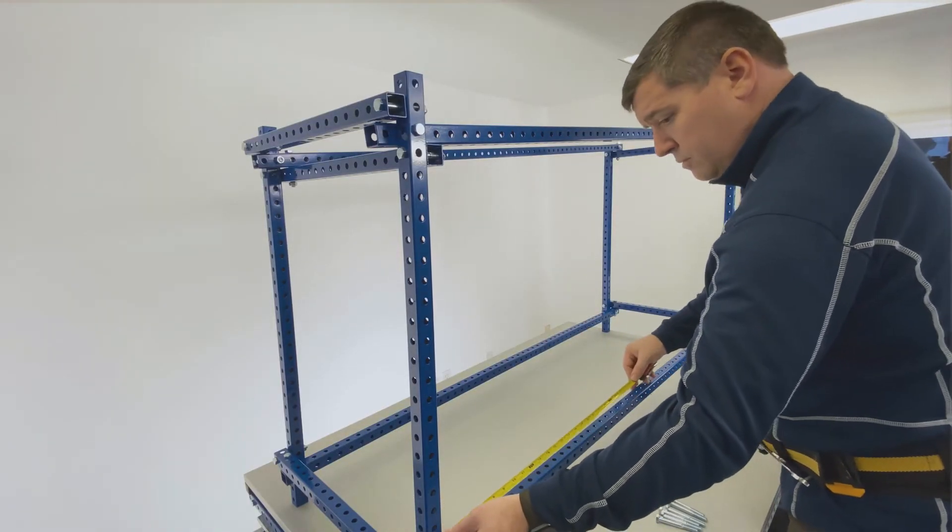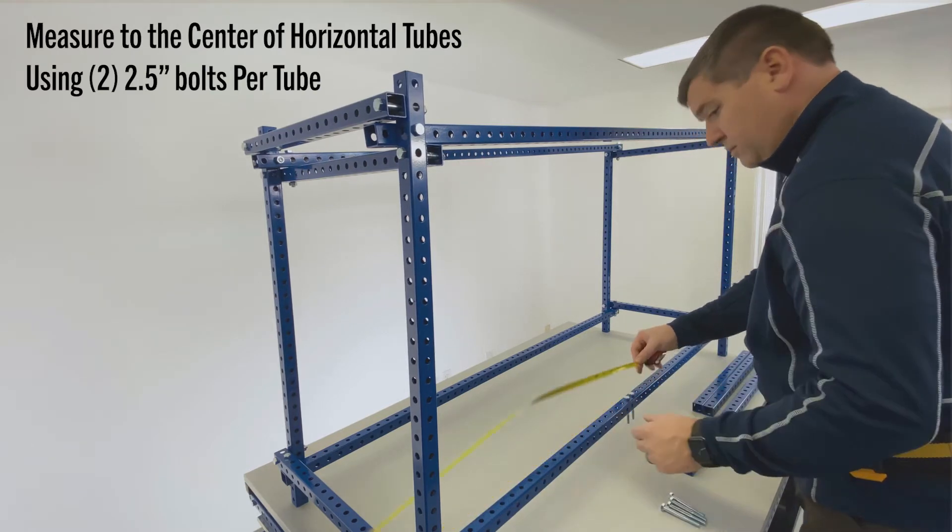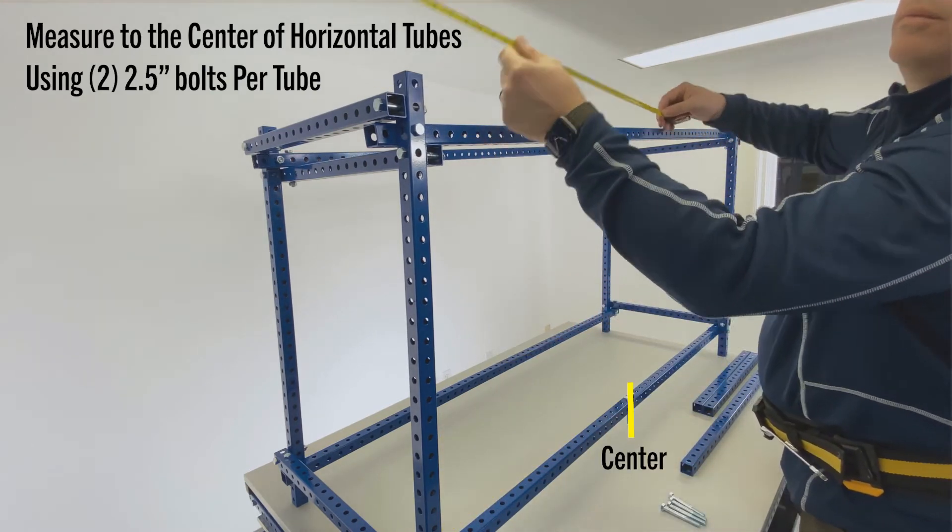Use a tape measure or count holes to find the center of the length tubes. A center support is normally only required for flow racks that are six feet or longer.